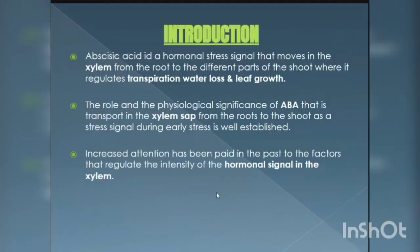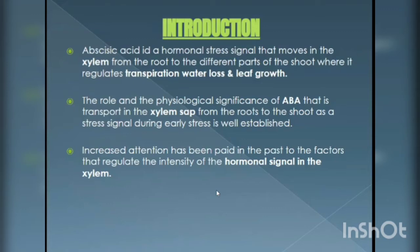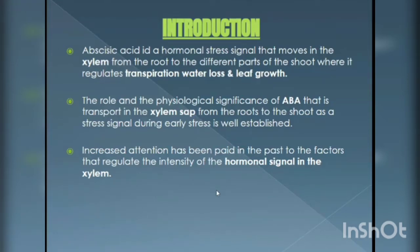The first heading is Introduction. Abscisic Acid is a hormonal stress signal that moves in the xylem from the root to the different parts of the shoot, where it regulates transpiration, water loss, and leaf growth. The role and physiological significance of the ABA that is transported in the xylem sap from the roots to the shoot as a stress signal during water stress is well established. Increased attention has been paid to the factors that regulate the intensity of the hormone signal in the xylem.